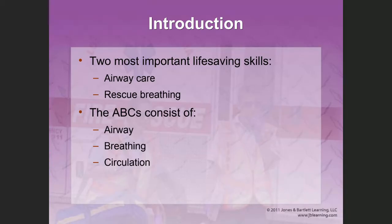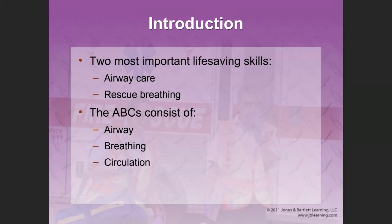The ABCs consist of airway, breathing, and circulation. Things that can kill a patient very quickly in the field: one, a patient with an airway that's closed; two, a patient with ventilation issues or a patient in which the chest is not moving; and three, a patient who is bleeding excessively. Keep these in the back of your mind when assessing a critical patient.